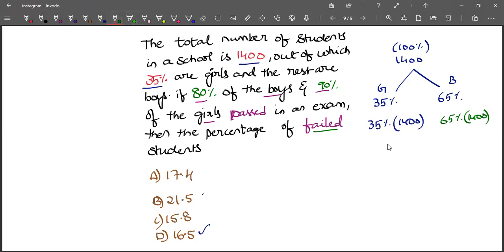So if 80% of boys passed in the exam, then the remaining 20% failed in the exam. So the number of boys who failed in the exam would be given as 20% of the total boys.